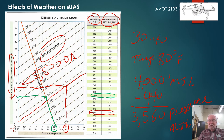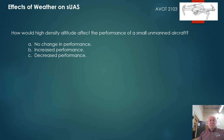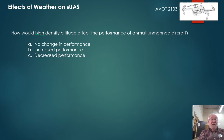Performance is worse in that particular example. Here's a sample question: How would high density altitude affect the performance of a small unmanned aircraft? You can rephrase this — if the outside air temperature at a given altitude is warmer than standard, then the density altitude would be higher than pressure altitude, which means a decrease in performance. High density altitude means thinner air.